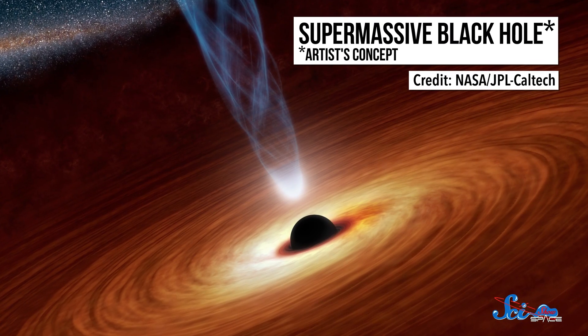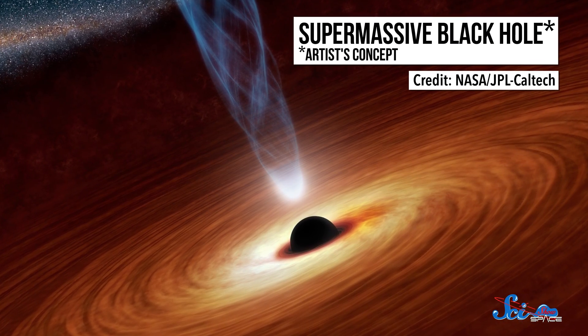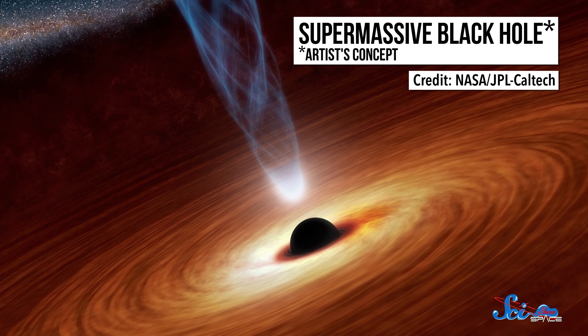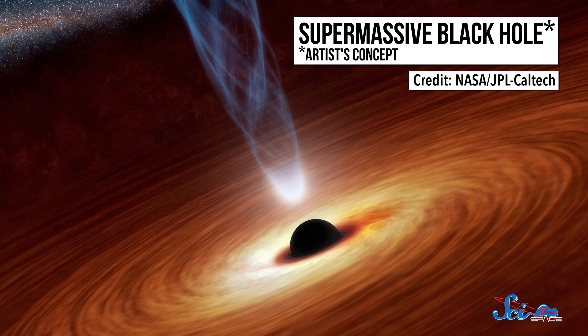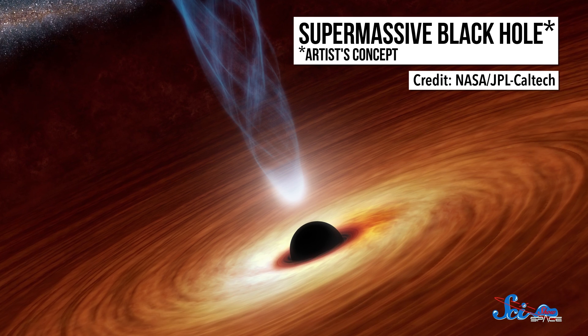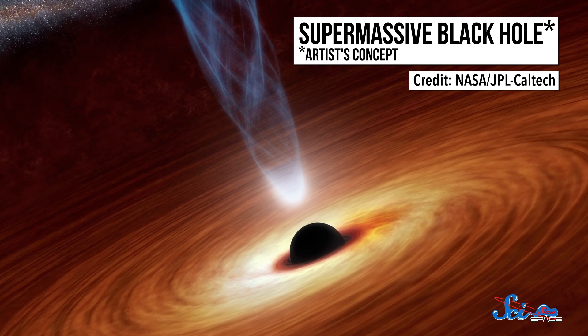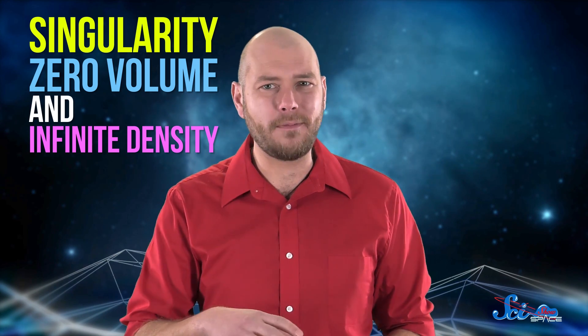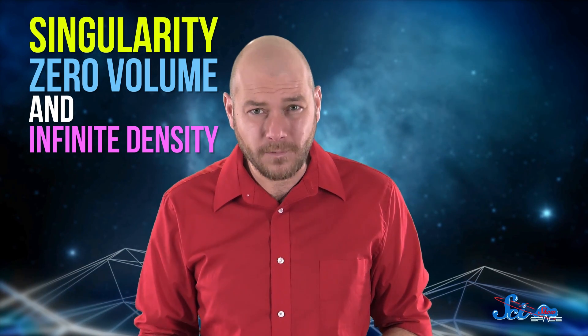When a star dies, it undergoes a gravitational implosion and starts to collapse in on itself. If the star is massive enough, nothing can stop the collapse, and all that matter turns into a single point in space. We call that point a singularity, and it has zero volume and basically infinite density. With basically everything involving infinity, it's hard to even imagine what that means, but that's astrophysics for you. Things get weird. And you might want to fasten your seatbelt, because things are about to get a whole lot weirder.